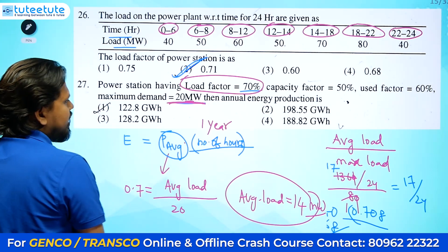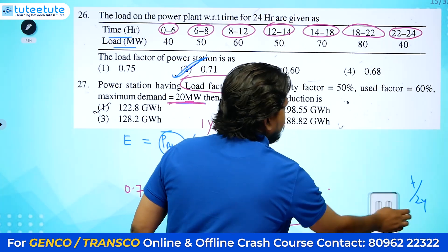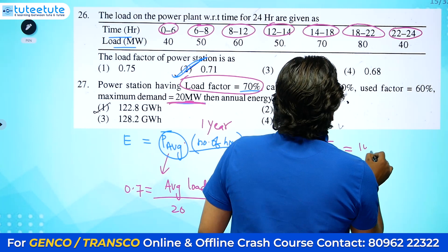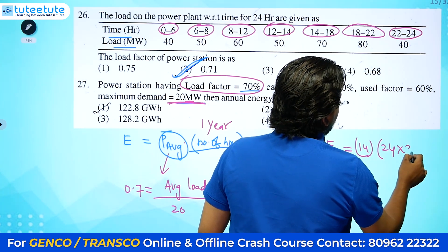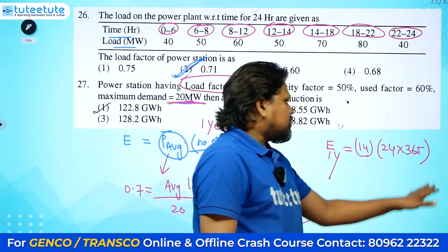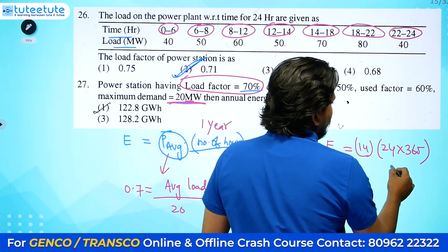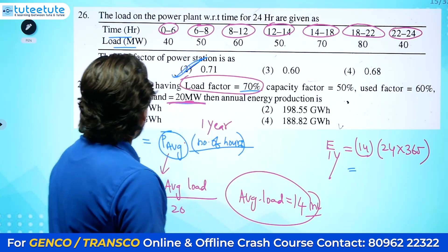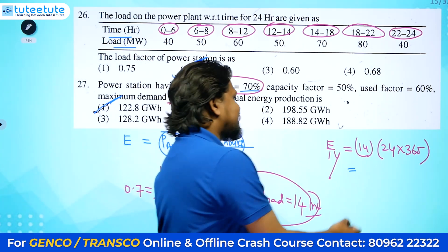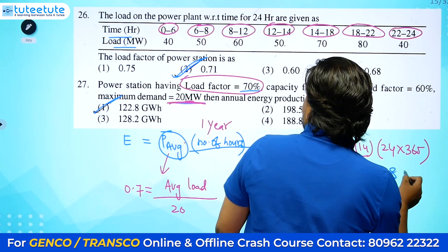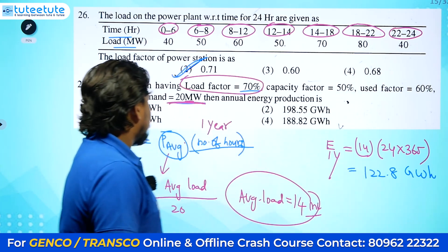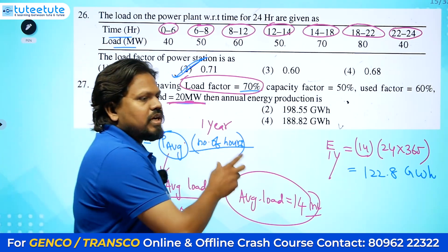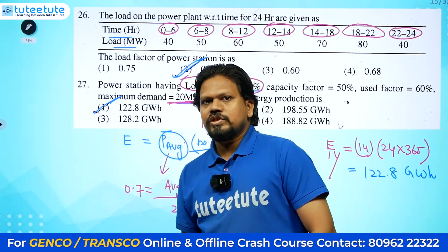Average load is 14 MW. Energy for one entire year = 14 × 24 × 365. The value 24 × 365 = 8760 hours. So annual energy = 14 × 8760 = 122.8 GWh. This is how you calculate annual energy production for any generator — knowing the load on it and calculating yearly generation.